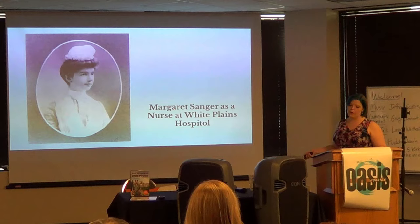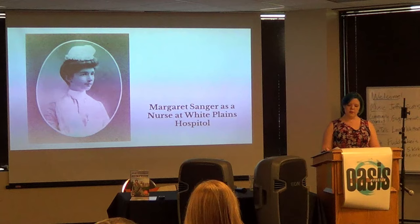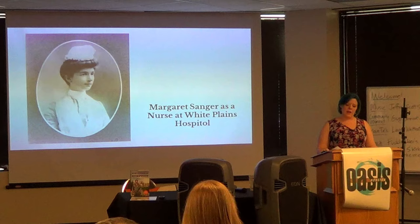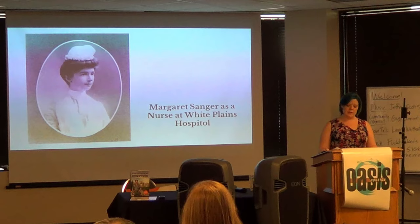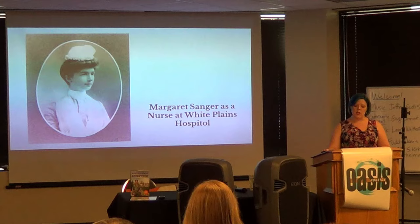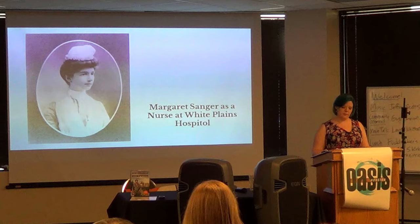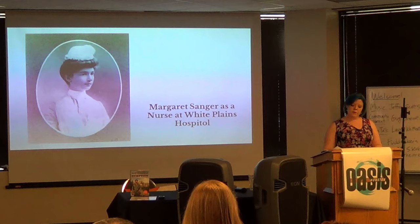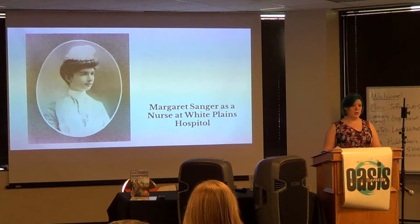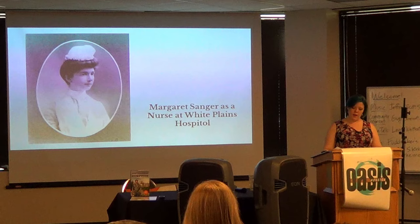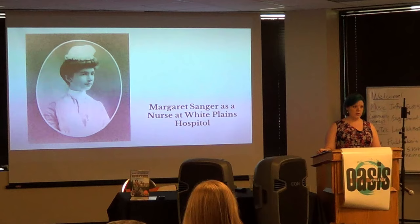Into all of this, Margaret Sanger was born — Margaret Higgins — in Corning, New York, in 1879, to Irish immigrant parents. Margaret's mother, Anne, was pregnant 18 times in her 30-year marriage; seven of those pregnancies ended in miscarriage. At the age of 50, her mother died of tuberculosis and, no doubt, exhaustion from 18 pregnancies and caring for 11 children. Politically and philosophically, Margaret took after her father Michael — a vocal atheist and union sympathizer, which made him an outcast in Corning, a majority Catholic town. He lost work due to his beliefs. Because of her father, Margaret had the opportunity as a young girl to hear the noted agnostic Robert Ingersoll speak; Michael Higgins was the one who invited him to Corning for a lecture.